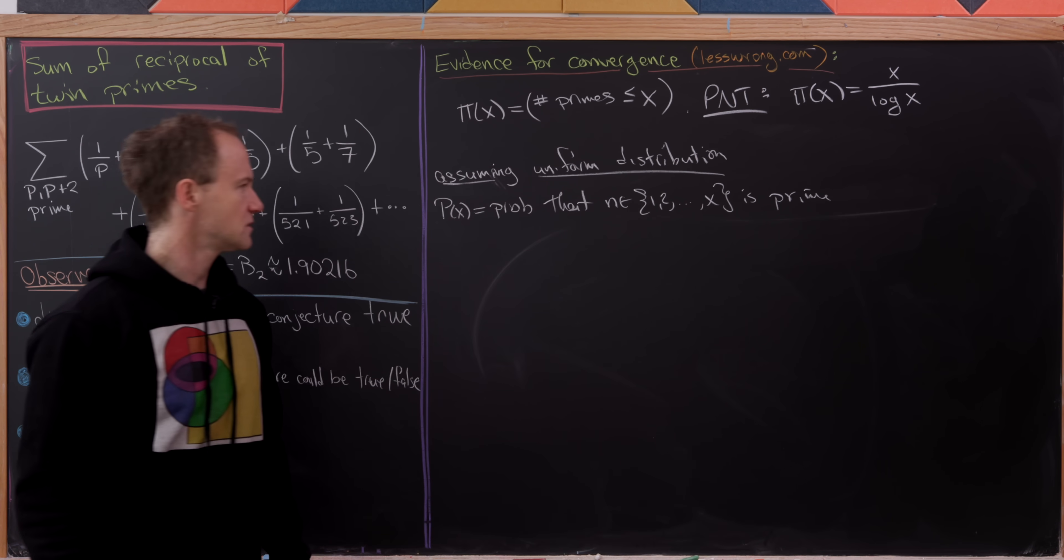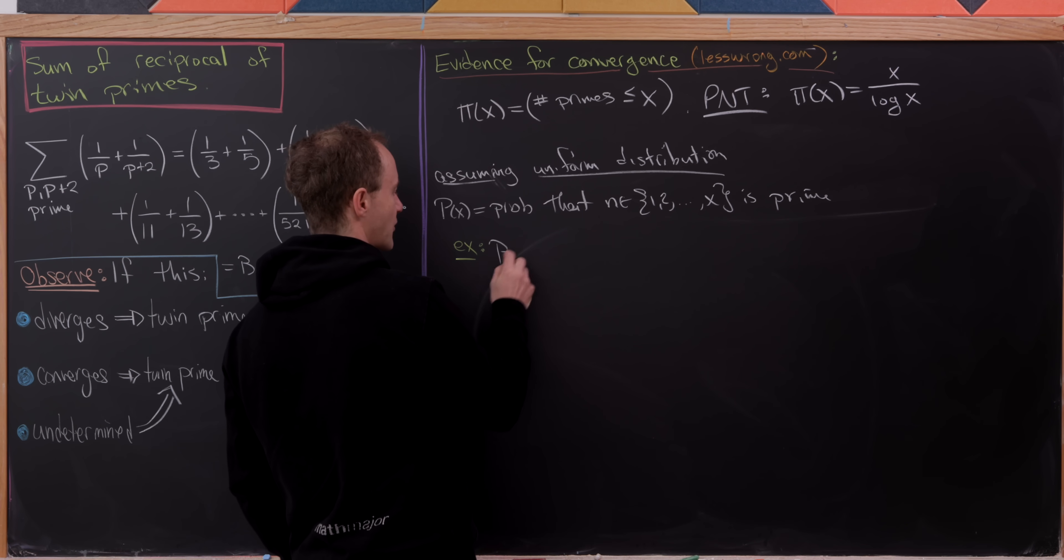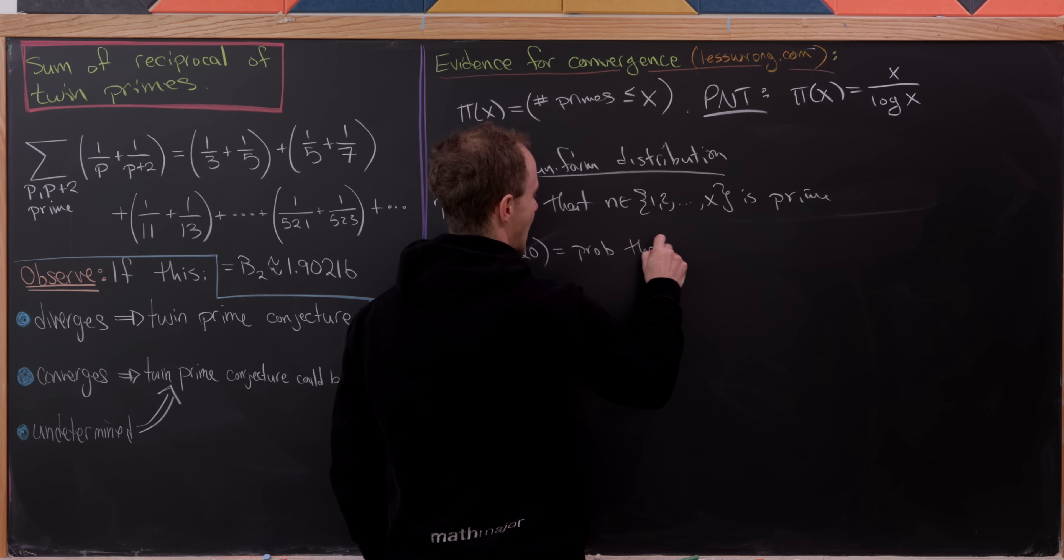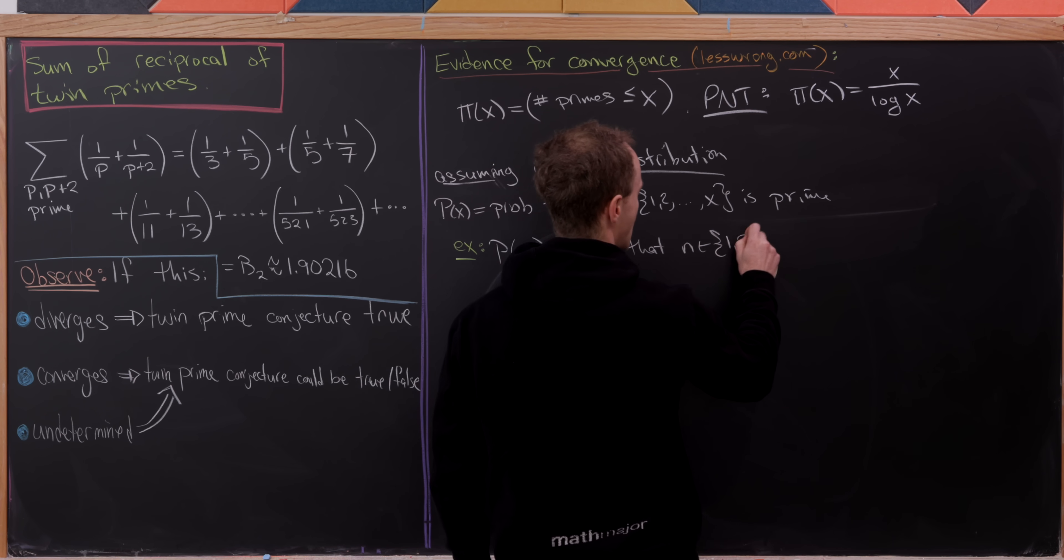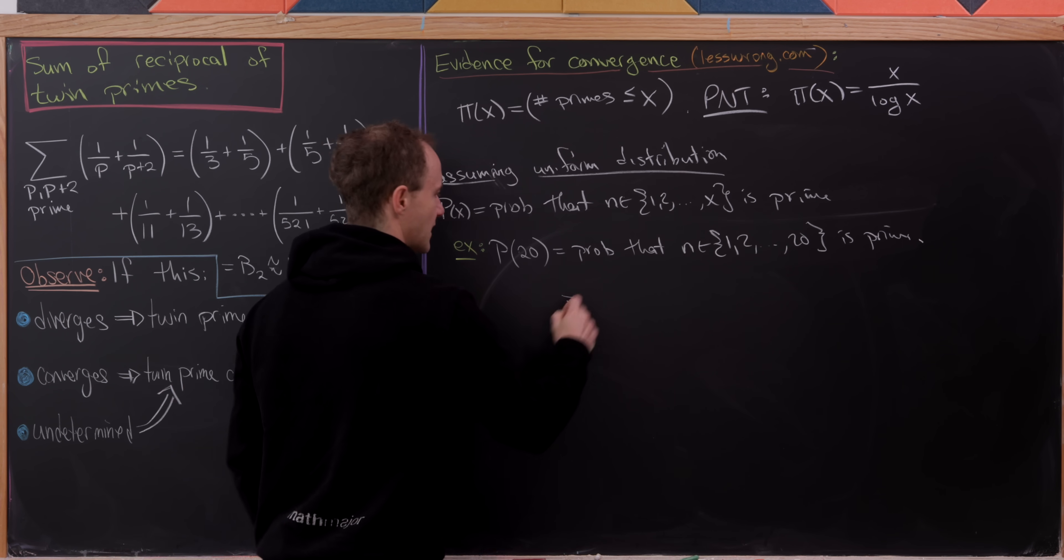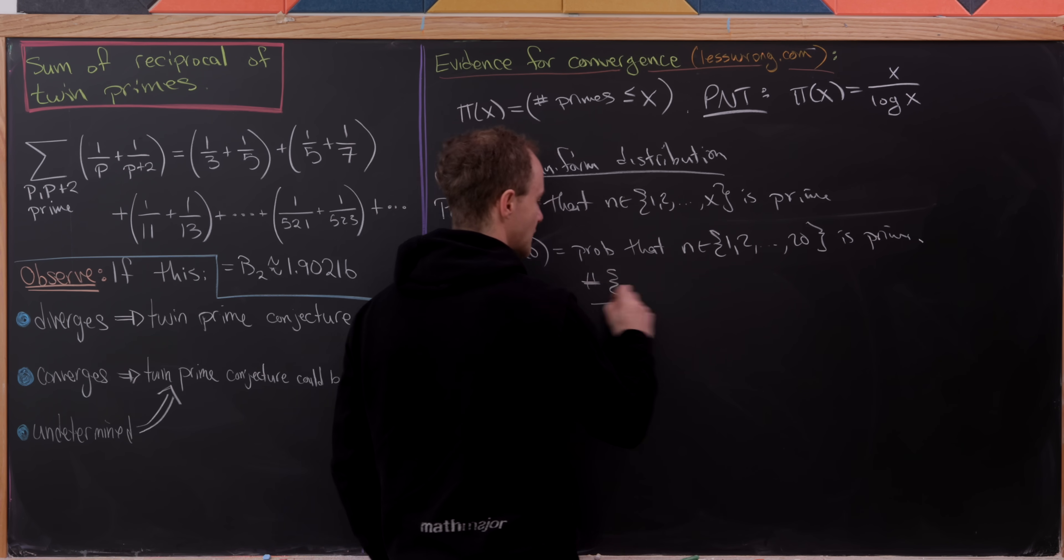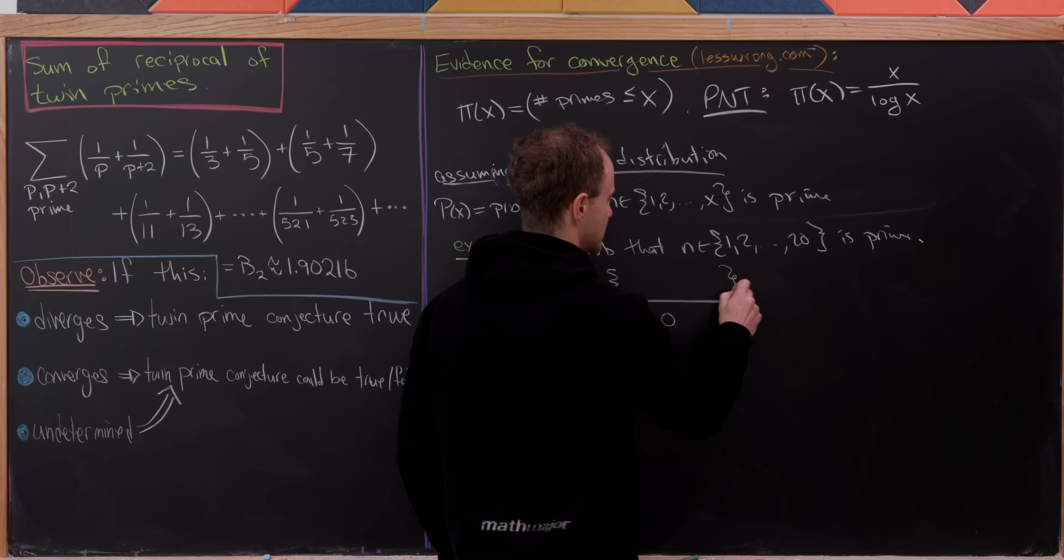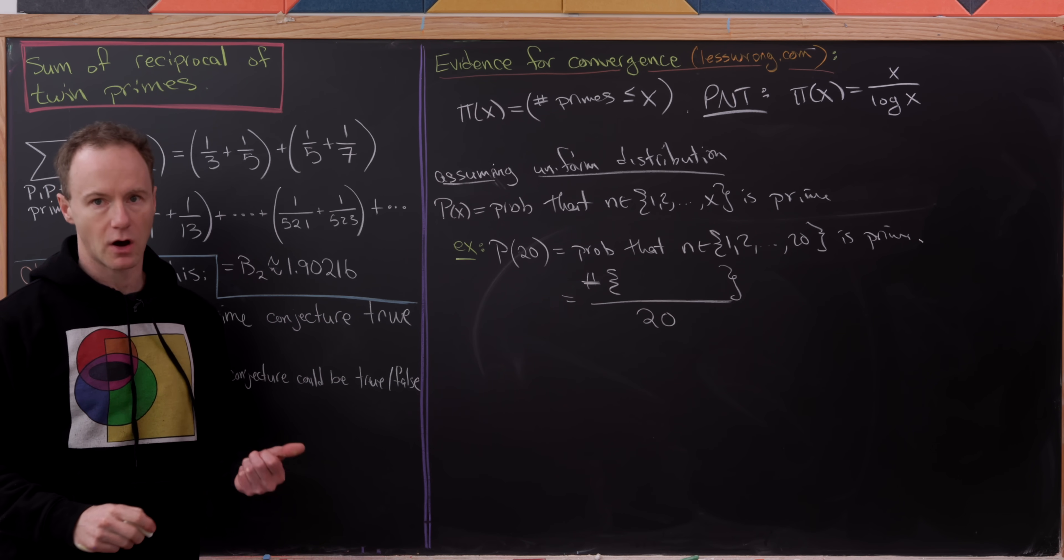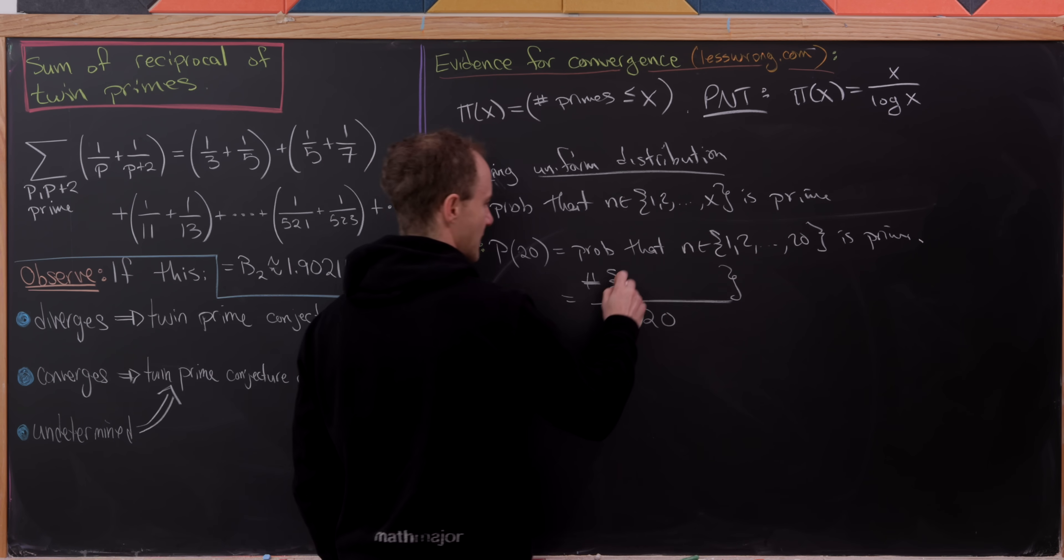Let's maybe do some examples of this function first. So let's maybe do the probability of 20 or P(20). So this is the probability that some number n between 1 and 20 is prime. But luckily we can just count this up. So this is going to be the number of primes over the number of numbers in the whole set. But it's easy to count the number of numbers in the whole set. That's just 20. So all we have to do is list all of the primes between 1 and 20. And obviously we don't need the number 1 there as it's not prime.